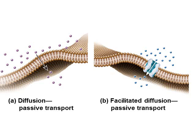This slide shows the two different types of passive transport. On the left-hand side, we have diffusion, where molecules move from an area of high concentration to lower concentration — it doesn't use any energy. Facilitated diffusion means there has to be a helper. These molecules still go from high to low concentration, but they have to move through a transport protein, shown in blue, embedded into the phospholipid bilayer.